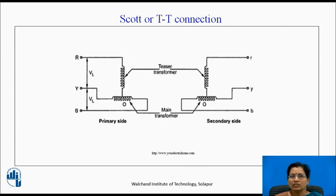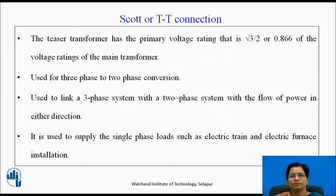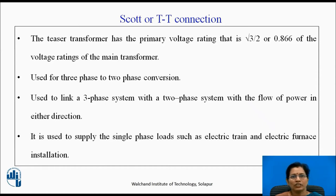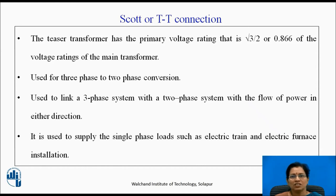This is the Scott connection. A teaser transformer and a main transformer are present. The teaser transformer has a primary voltage rating that is root 3 by 2 or 0.866 of the voltage rating of the main transformer. We can use this TT connection or Scott connection for 3-phase to 2-phase conversion. It is also used to link the 3-phase system with a 2-phase system with flow of power in either direction, and it is used to supply single-phase loads such as electric trains and electric furnace installations.